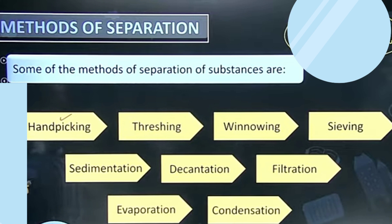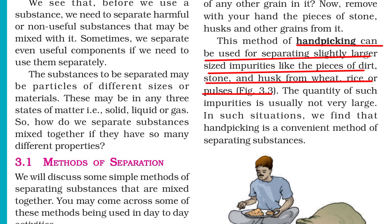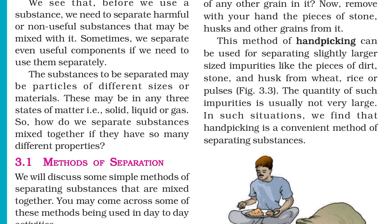The first method is handpicking. Handpicking can be used for separating slightly large-size impurities like pieces of dirt, stone, and husk from wheat, rice, or pulses. The quantity of such impurities is usually not very large. This is the handpicking definition.